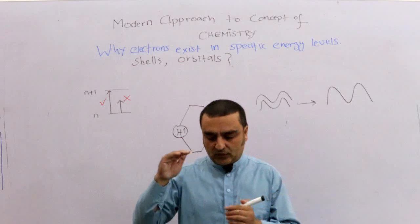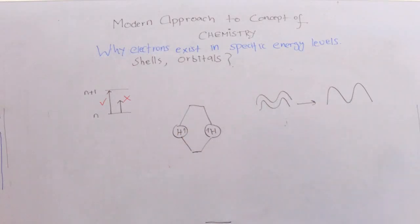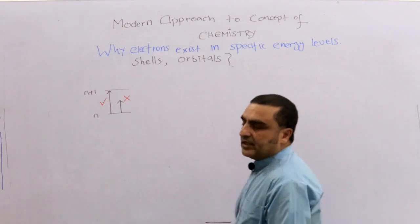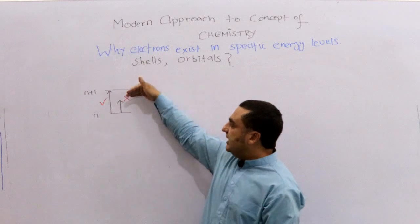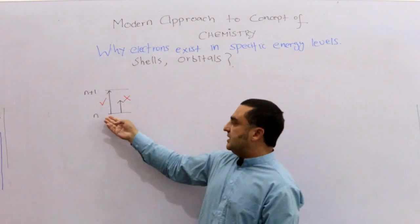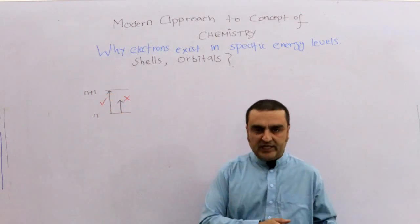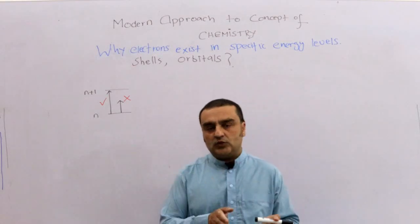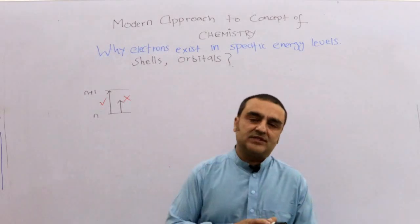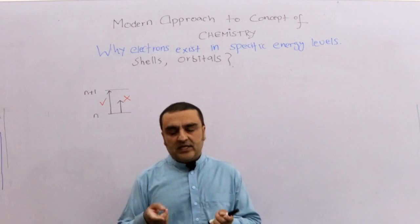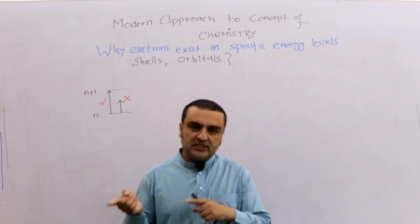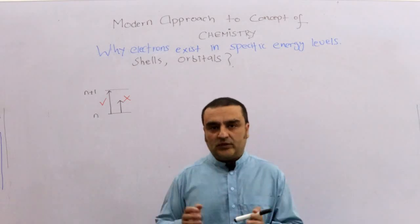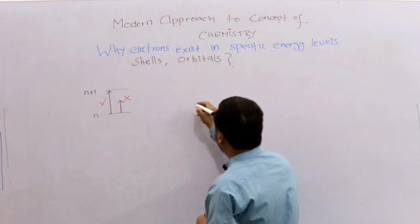Taking this concept further, I would like to explain why electrons exist in particular shells or orbitals, and why electrons are not excited to a half level but only to an integer level — that question will also be addressed. But first, we need to understand a type of wave called a standing wave. When we understand standing waves, we will be able to understand the behavior of an electron in an atom.